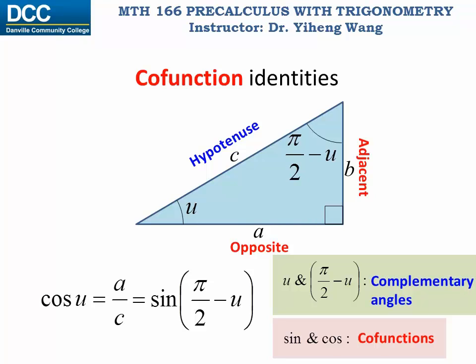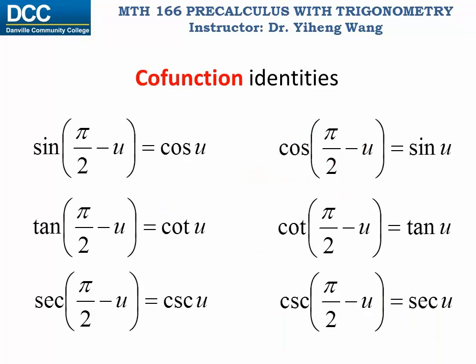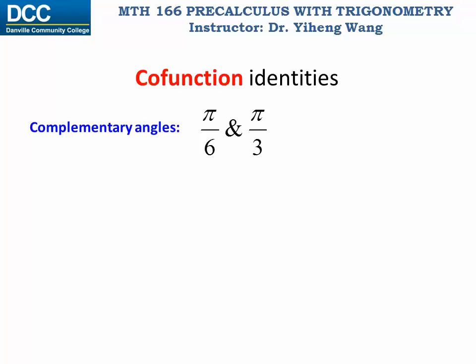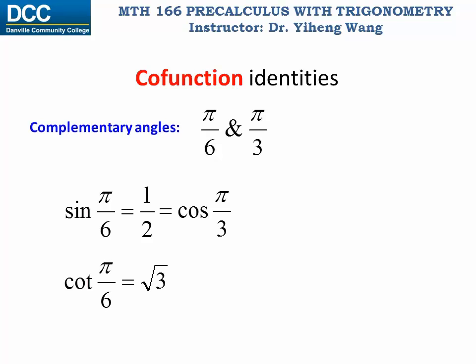This extends to the other trigonometric functions: for any two mutually complementary angles, their co-functions equal each other. Sine and cosine are co-functions, tangent and cotangent are co-functions, and secant and cosecant are co-functions. For example, pi/6 and pi/3, or 30 degrees and 60 degrees, are complementary angles. We know that sine of pi/6 equals one half, and one half also equals cosine of pi/3. Similarly, cotangent of pi/6 equals the square root of 3, which equals tangent of pi/3.